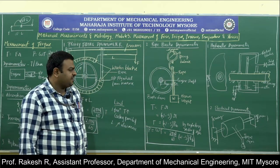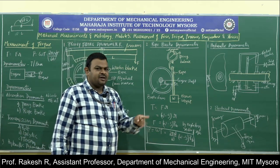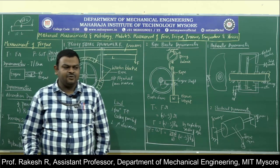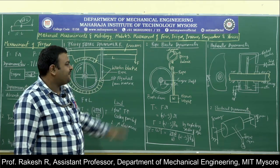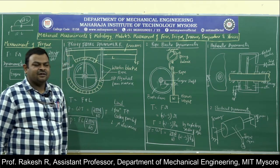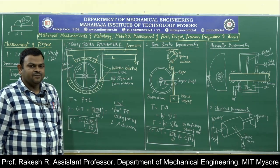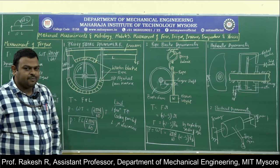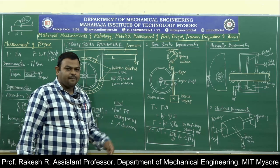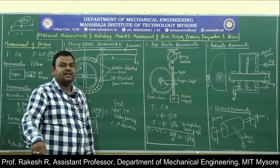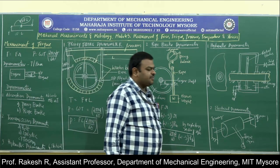To reduce fluctuation, hydraulic dynamometers are used, though their cost is more compared to rope brake dynamometers. Electrical dynamometers are also used, where power is directly measured. Let us see the hydraulic dynamometer. The arrangement has an output shaft with a hydraulic system. Friction is less in hydraulic systems compared to mechanical systems.